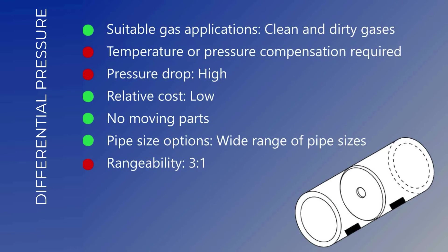Differential pressure measurement is a common technology for measuring flow in a closed pipe. DP flow solutions are made up of a primary element such as an orifice plate, which introduces a pressure drop. A secondary element such as a transmitter measures the differential pressure and applies Bernoulli's equation to calculate the flow. Differential pressure flow measurement is suitable for clean and dirty gas applications, requires temperature or pressure compensation, has a high pressure drop, is low cost, has no moving parts, is available in a wide range of pipe sizes, and has a rangeability of 3 to 1.